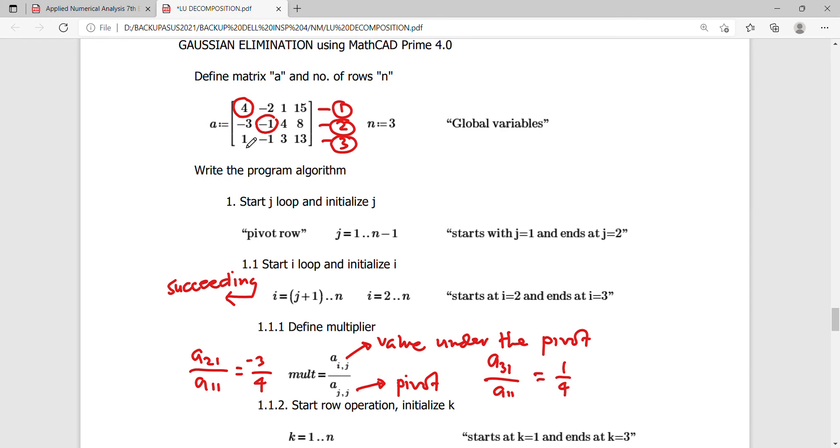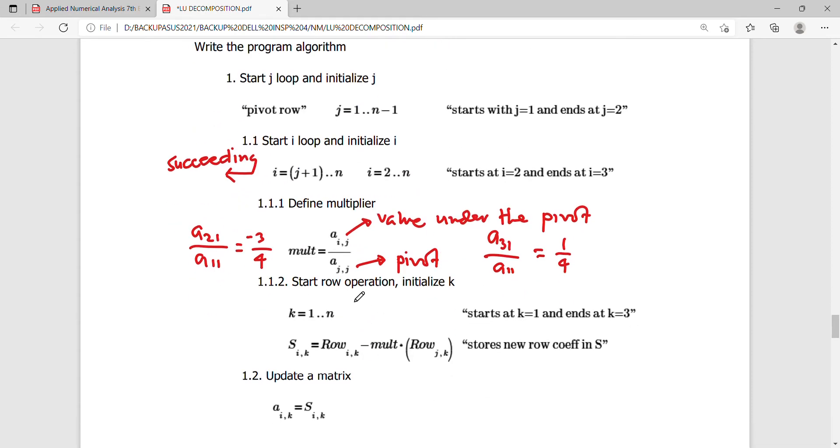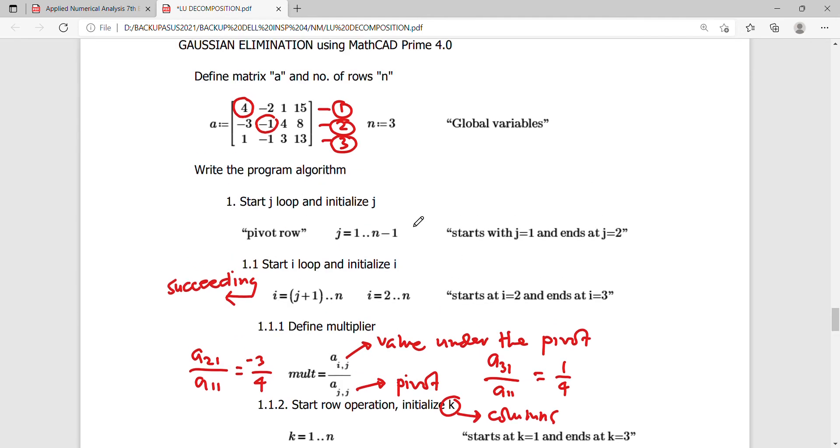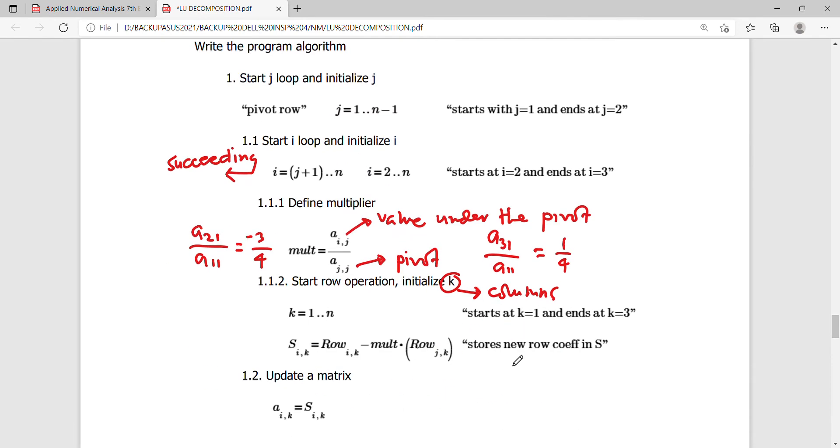And since we are now ready to do the first cycle, we start now the row operation or the row transformation by initializing, of course, your K value, another counter that will capture now the columns. So K now are simply the columns starting from 1 to 3. Since there's an augmented portion here, your K counter must have a plus 1 there. So it ends at 4 here. So there's a slight correction on the algorithm.